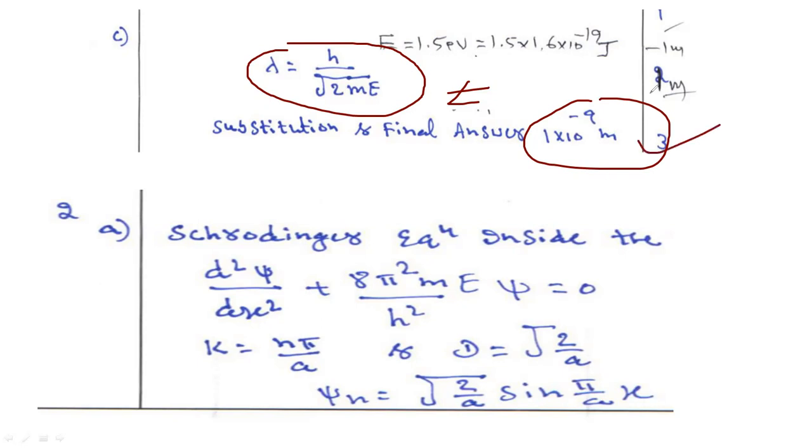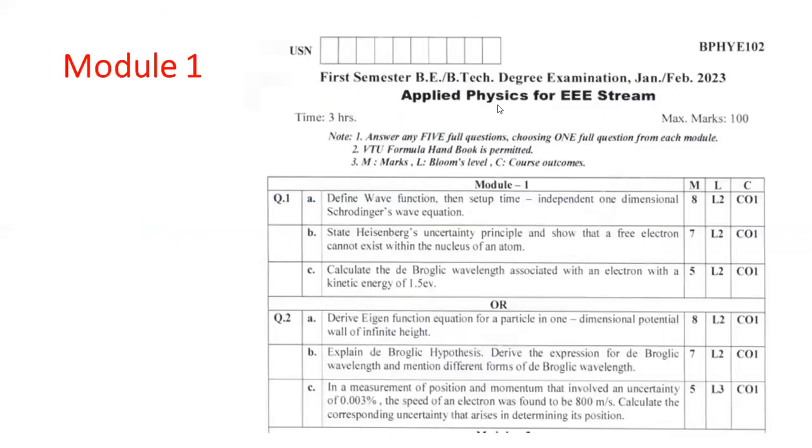This is our answer. You will be getting three marks if you get the final answer. Altogether, how much you will be getting? I will show you the question paper once again. Use the formula. Ultimately, you will be getting five marks. These are the questions from the first part.